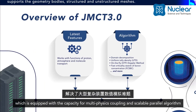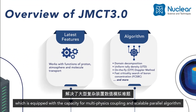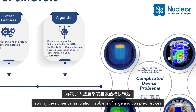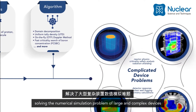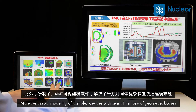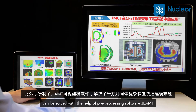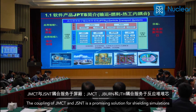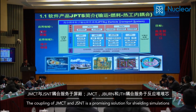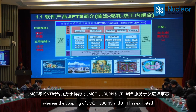JMCT serves as a promising 3D neutron-photon-electron transport MC code equipped with multi-physics coupling capacity and a scalable parallel algorithm, solving the numerical simulation problem of large and complex devices. Moreover, rapid modeling of complex devices with tens of millions of geometric bodies can be solved with the help of pre-processing software JLAMT.